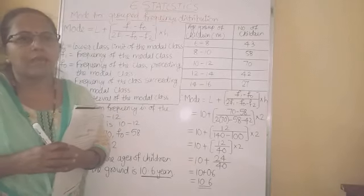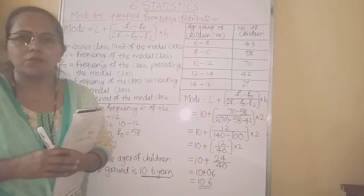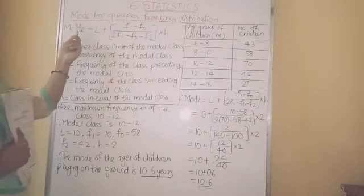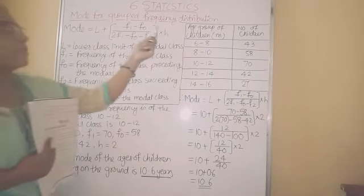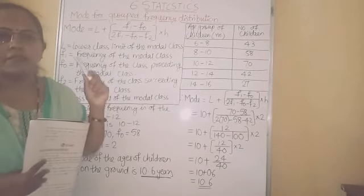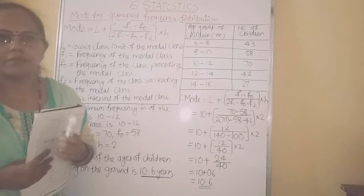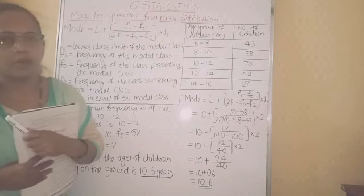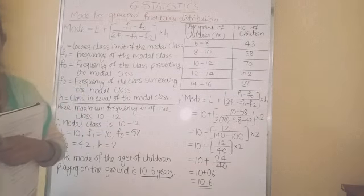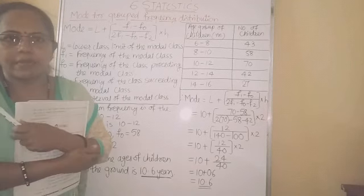We studied how to calculate mean and median for grouped distribution tables. Today we will see mode for grouped frequency distribution. The score which occurs maximum times in the given data is called the mode. If the data is very small in quantity, by observation we can find out which score occurs maximum times.